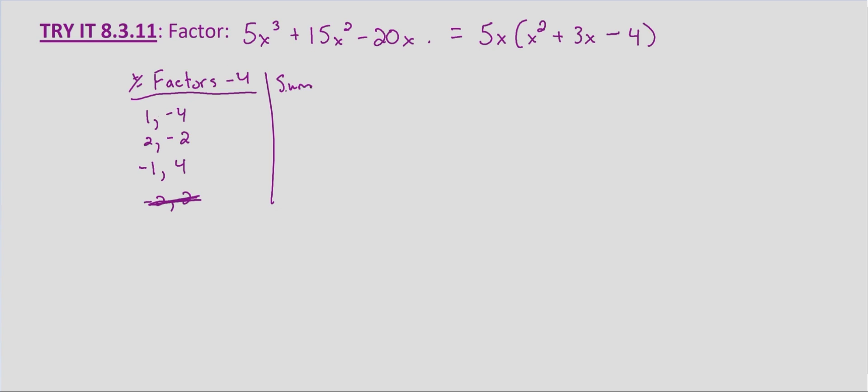And we have 1 minus 4 is negative 3. 2 minus 2 is 0. That would end up being a conjugate. And then negative 1 plus 4 is 3. That's what we're wanting. We're wanting positive 3. So we know it's going to be X minus 1 times X plus 4.